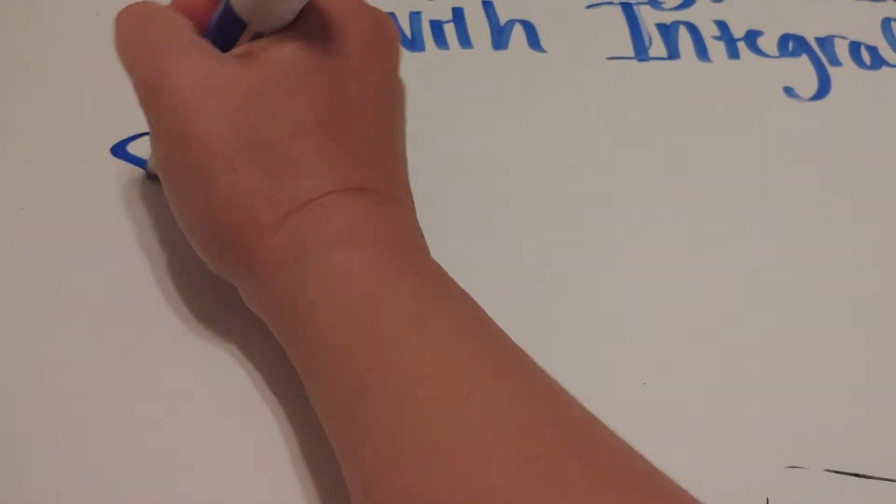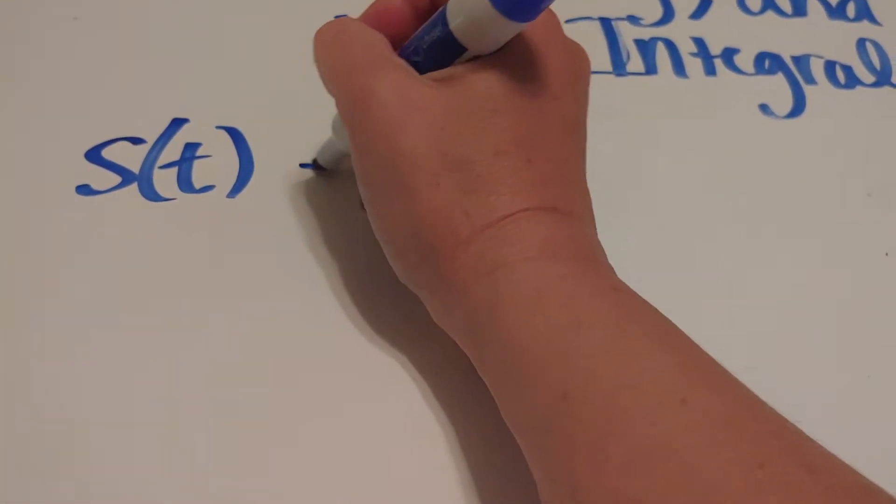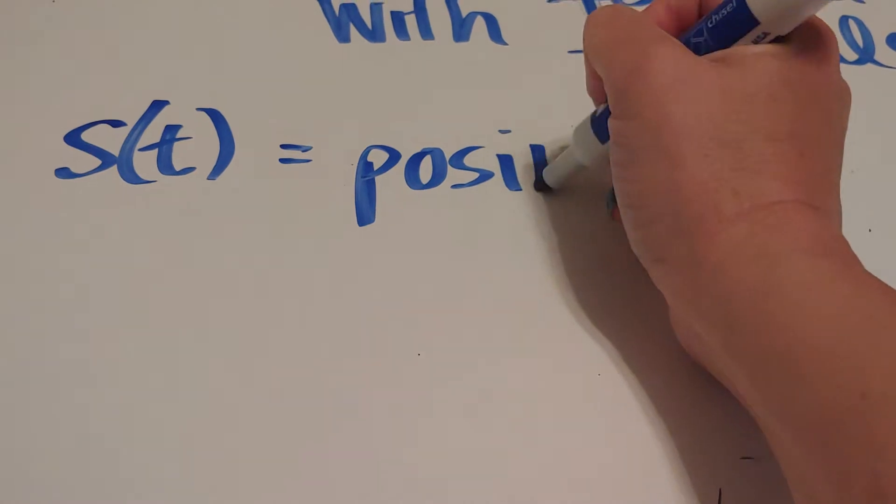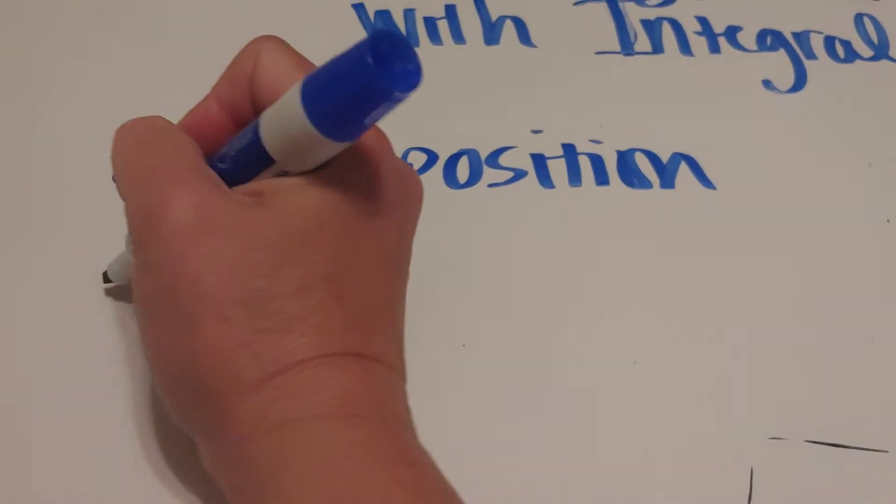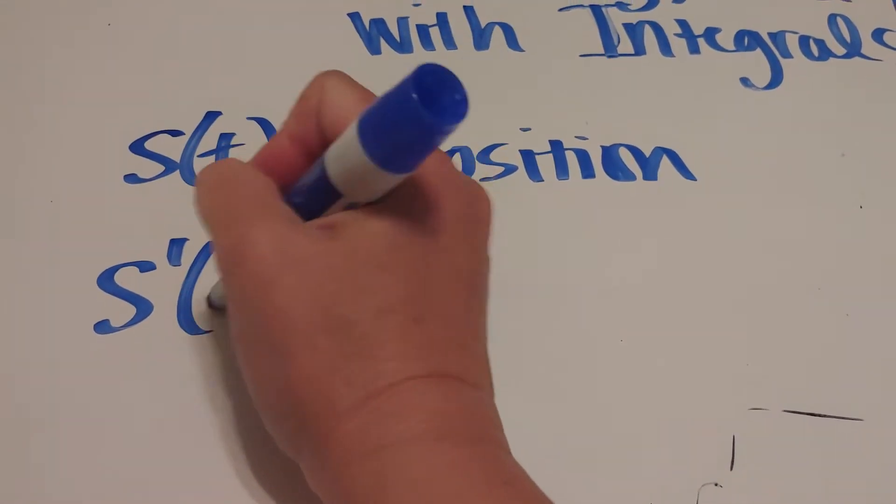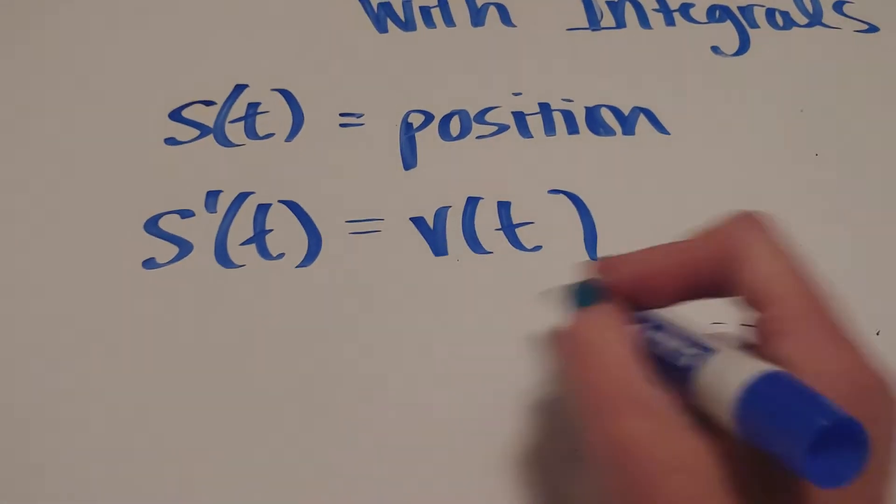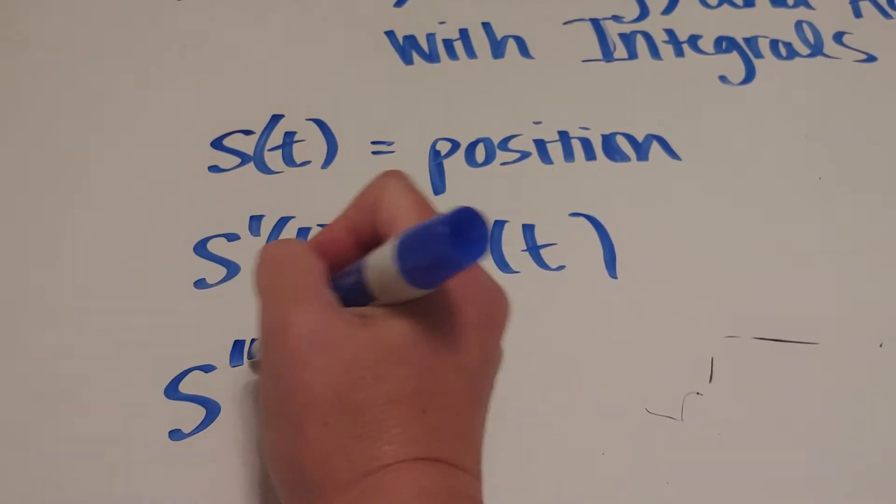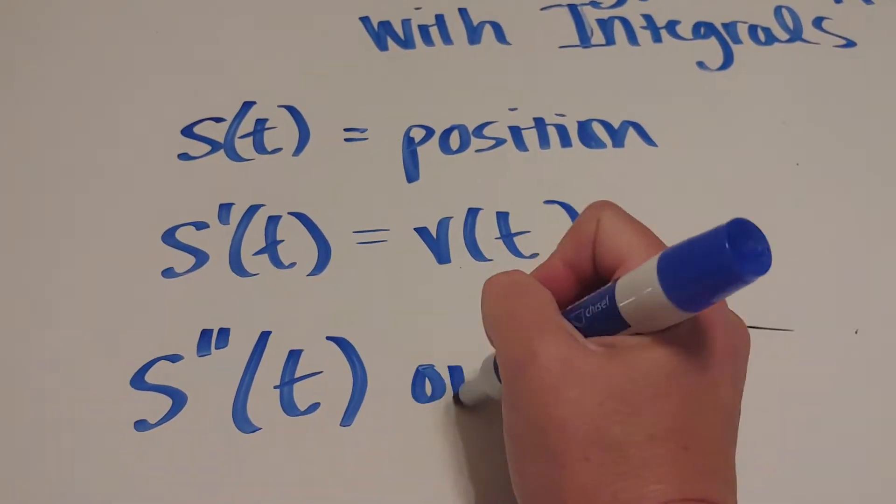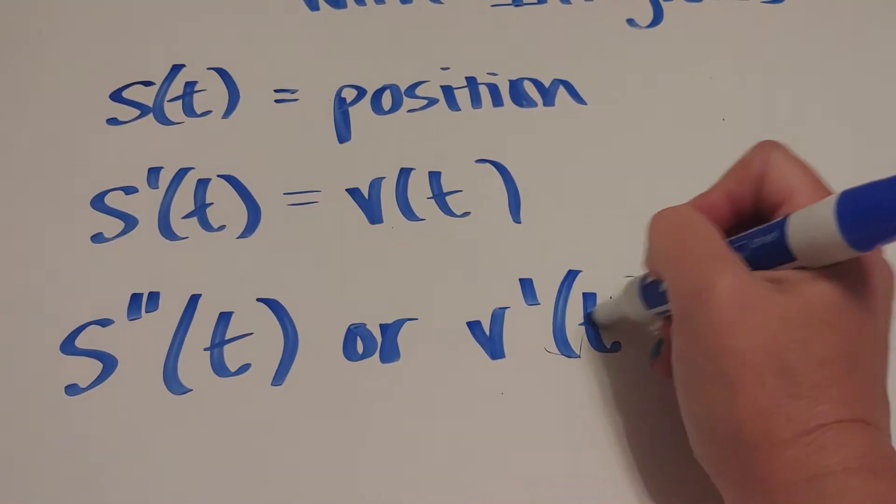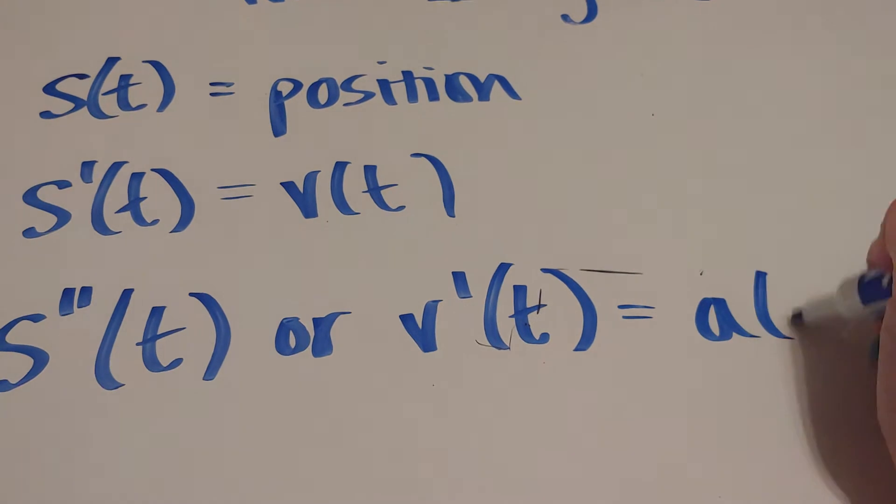So the derivative - if this is the position, we'll call s(t) the position - then we know that if I take the derivative of the position, I get the velocity. And if I take the second derivative of the position, which is the same thing as the derivative of the velocity, I get the acceleration.